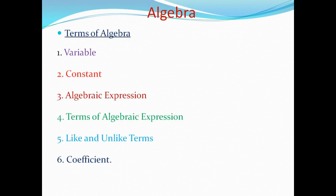Now we will discuss some terms of Algebra. The terms we are going to use in Algebra are: first, variable; second, constant; third, algebraic expression; fourth, terms of algebraic expression; fifth, like and unlike terms; and sixth, coefficient. We will discuss them one by one.